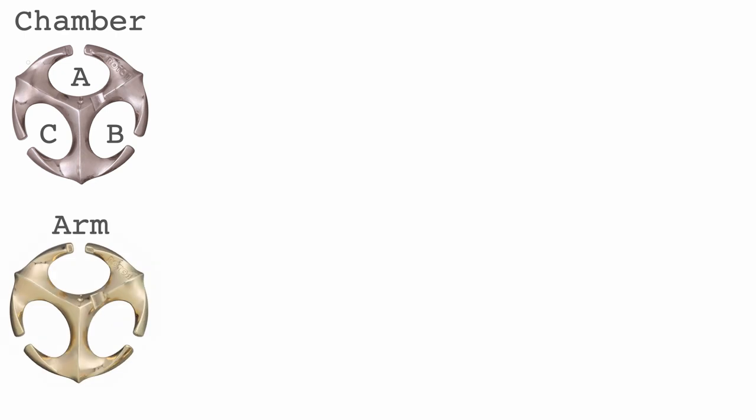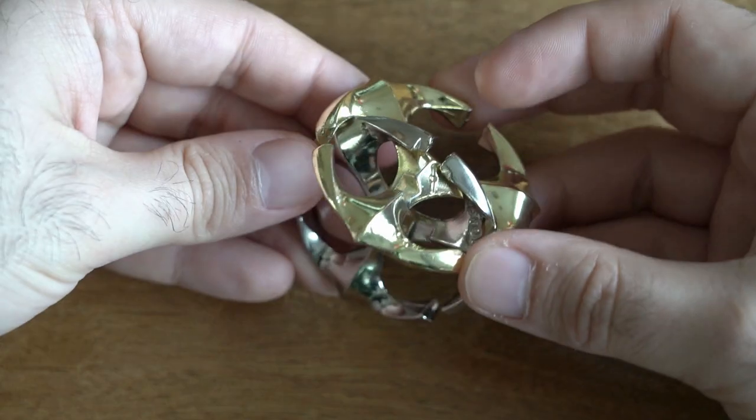On the white piece there are three chambers A, B, and C, and on the yellow piece there are three arms that we again call a, b, and c using lowercase letters. Note that the chambers and the arms somehow match because the two pieces are actually identical.